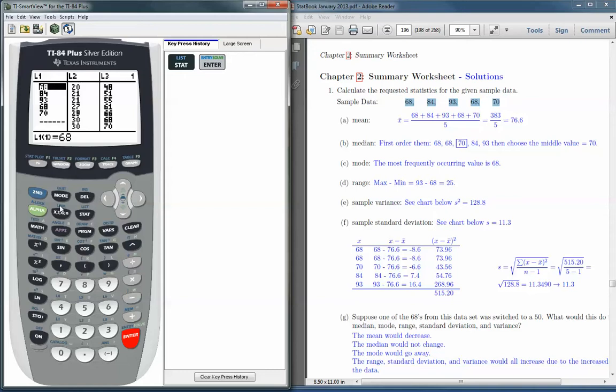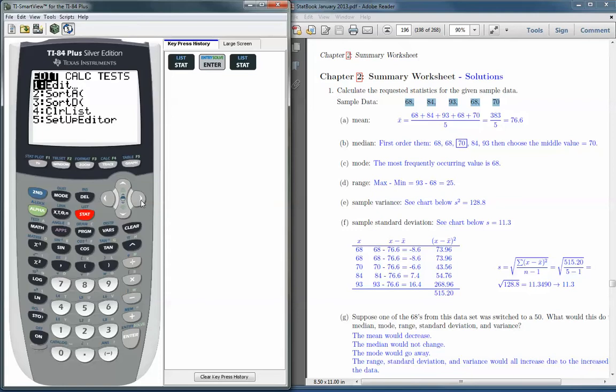So I'm going to go back to the STAT button. And now we're going to go over to CALC for calculation. So we'll move over there using the right arrow. CALC is now highlighted, and one-variable statistics, option one, is highlighted as well. I'll just hit Enter there.